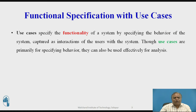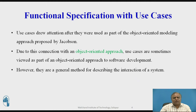First, we are going to see what is functional specification with use cases. Use cases specify the functionality of a system by specifying the behavior of the system captured as interactions of the users with the system. Though use cases are primarily for specifying behavior, they can also be used effectively for analysis. Use cases can be used to define functionality of a subsystem or whole system. Use cases drew attention after they were used as part of the object-oriented modeling approach proposed by Jacobson, and due to this connection, use cases are sometimes viewed as part of object-oriented software development. However, they are a general method for describing the interaction of a system.